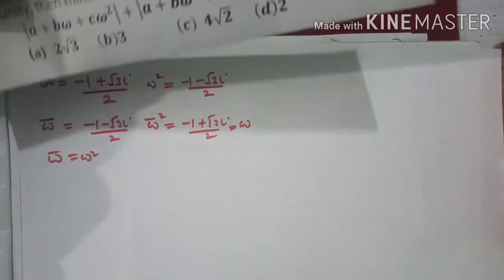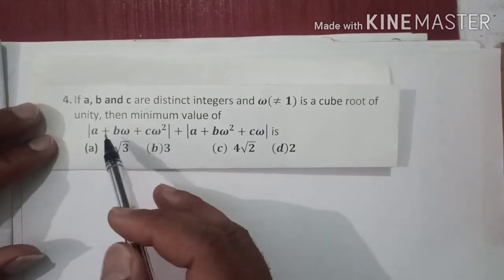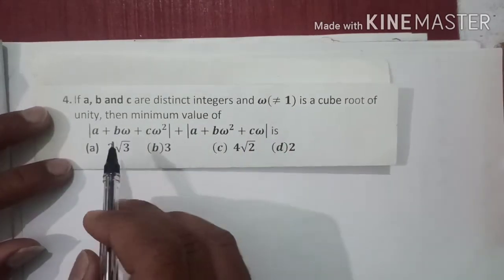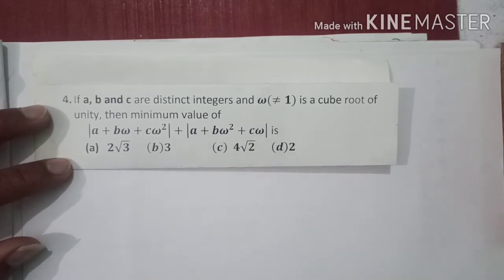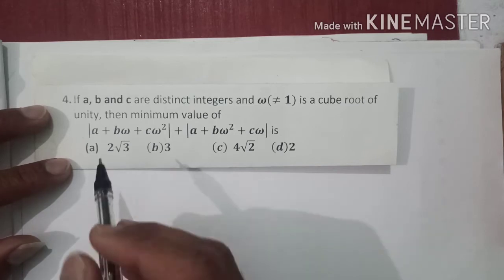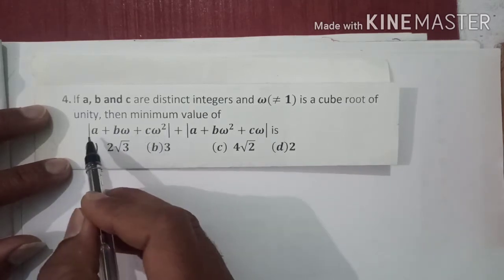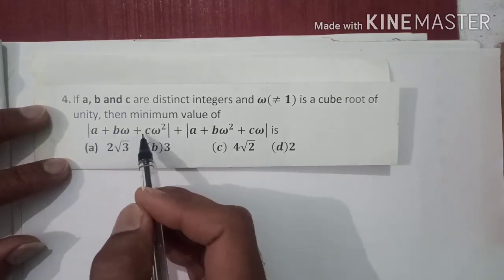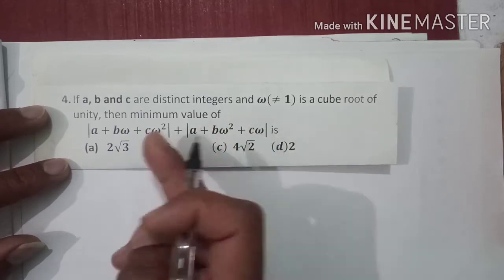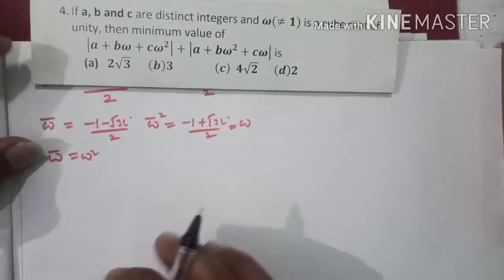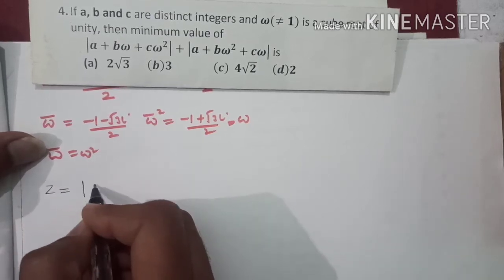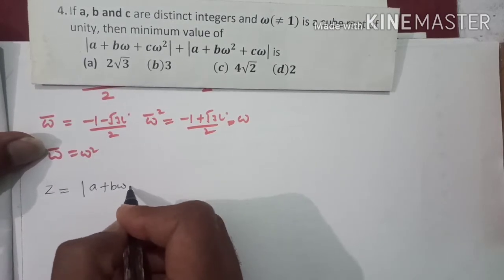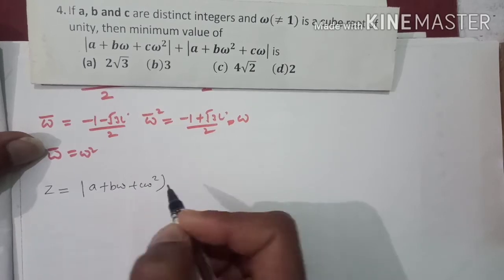اب ہم start کرتے ہیں۔ اس پورے expression کی minimum value find کرنی ہے، تو ہم دونوں حصوں کی minimum values نکال کر add کر لیتے ہیں۔ پہلے والے حصے کو z نام دیتے ہیں، تو یہ ہمارے پاس ہے: z = |a + bω + cω²|۔